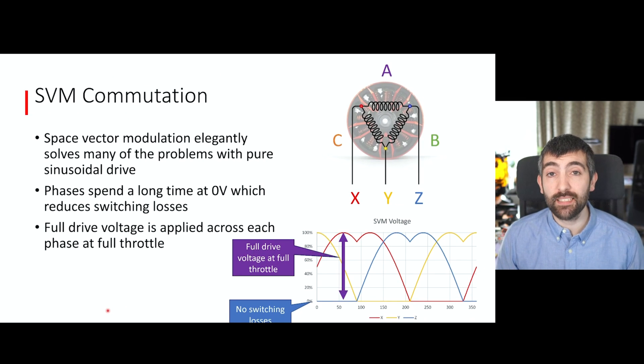SVM commutation or space vector modulation is a really elegant way of solving a lot of the problems that we saw with pure sinusoidal commutation whilst maintaining all of its advantages. With SVM, you can see that the driving voltage spends a long time at zero volts. You see it's zero here and then this yellow phase is zero all the way along here. All the time that the phase is at zero, we're not switching. So we're saving on switching losses. And also we can see that at full throttle, each phase does receive the full driving voltage from the battery, full battery voltage, and therefore you get full torque and power. But you may be wondering how does this weird double hump shape provide a nice sinusoidal driving current for our motor? It doesn't look anything like a sinusoid.